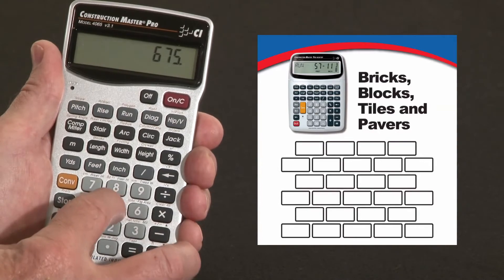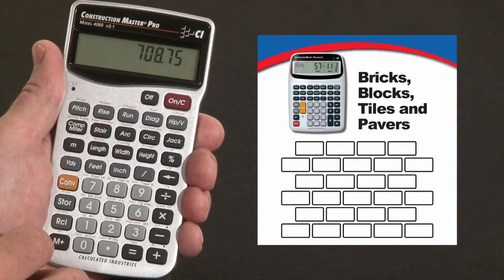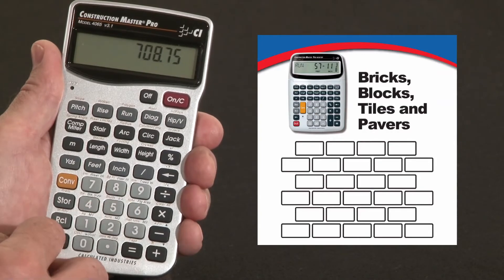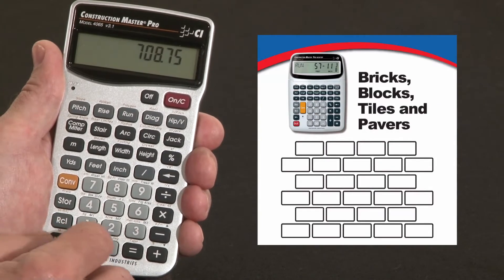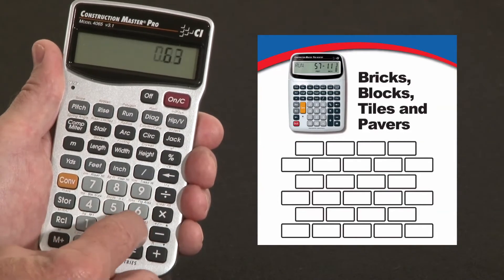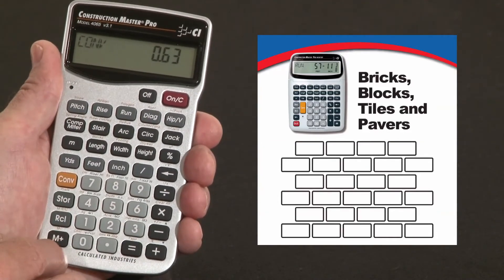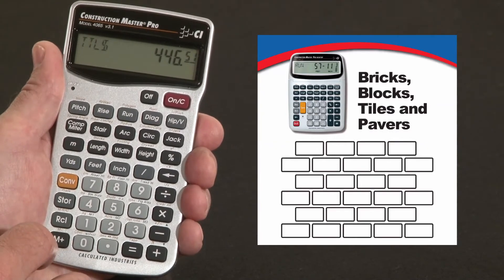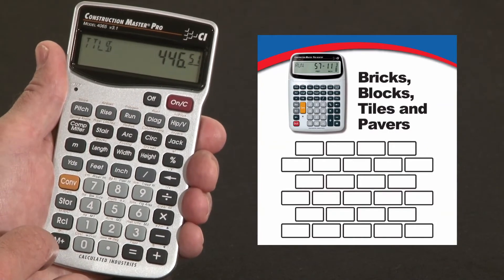Say you might want to add plus 5% for waste—708 blocks. Then let's say you've got a hot deal on these at 63 cents each at your local home center or building supply yard. Times .63, convert to cost, right over the zero key—that would be $446 worth of blocks.